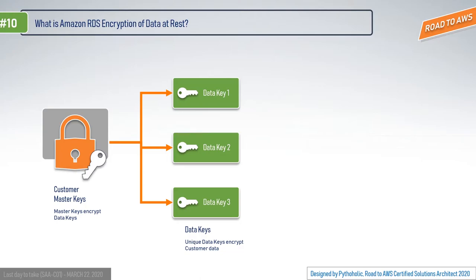Looking at this visually: the customer has master keys generated, and each piece of data at rest is encrypted using a unique key generated based on that master key. In other words, data keys are used to encrypt the data, and those data keys are themselves encrypted by the master key.